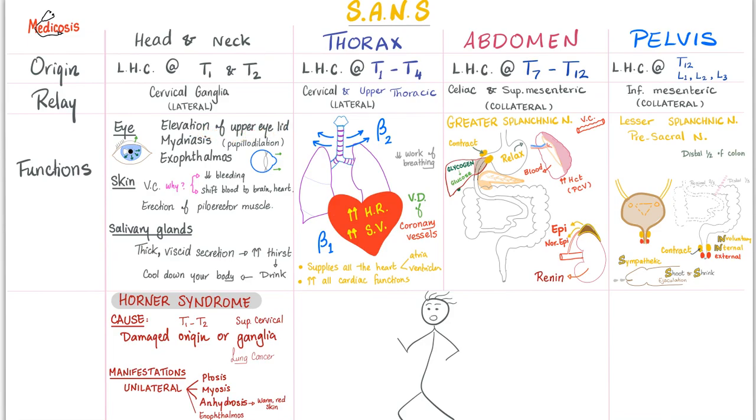Manifestations. The opposite of all of these. Instead of elevation of upper eyelid, you get ptosis, which is drooping of the upper eyelid. Instead of mydriasis, you get miosis. Instead of exophthalmos, you get enophthalmos. Instead of sweating, you get anhidrosis. And therefore, you'll have warm red skin. Where does that happen? Is this unilateral or bilateral? Just unilateral. Is this ipsilateral or contralateral? It's ipsilateral. So if this lung cancer is on the right side, you'll have Horner syndrome on the right side. Your right eye will have ptosis miosis. Your right half of the face will have anhidrosis.